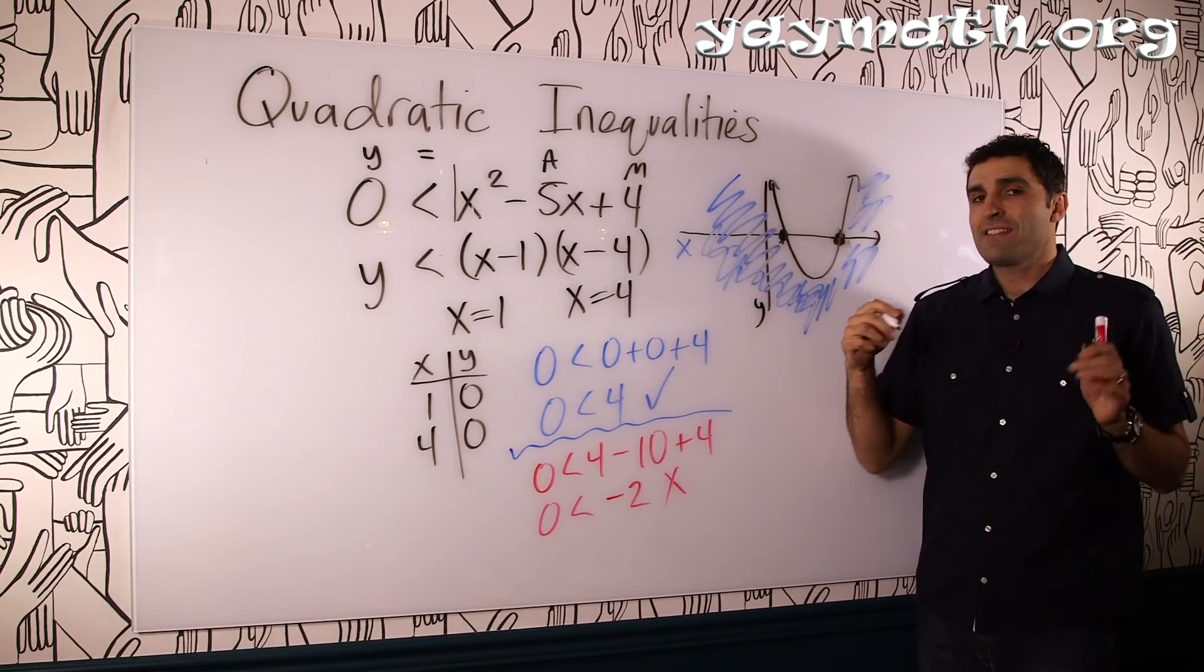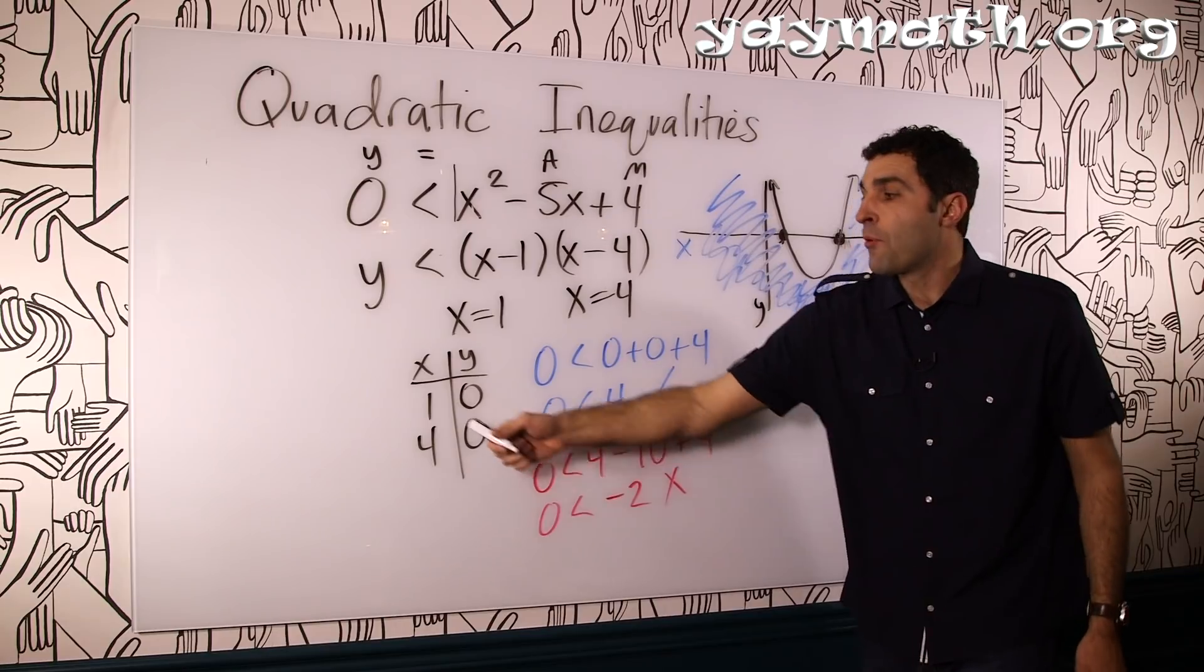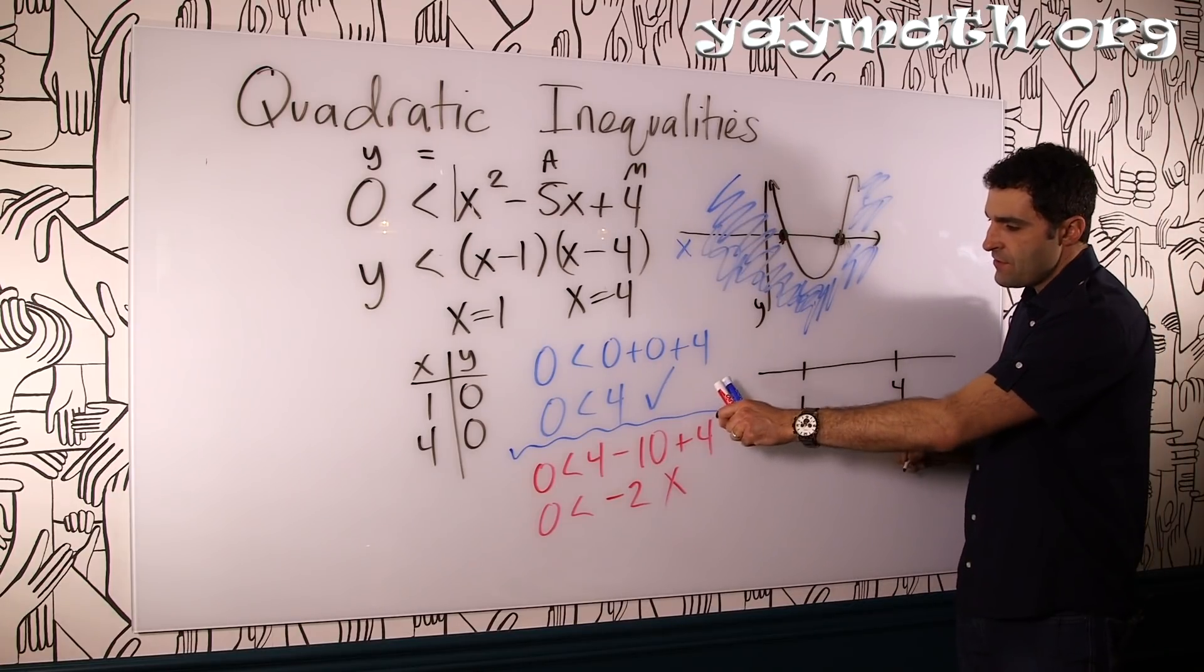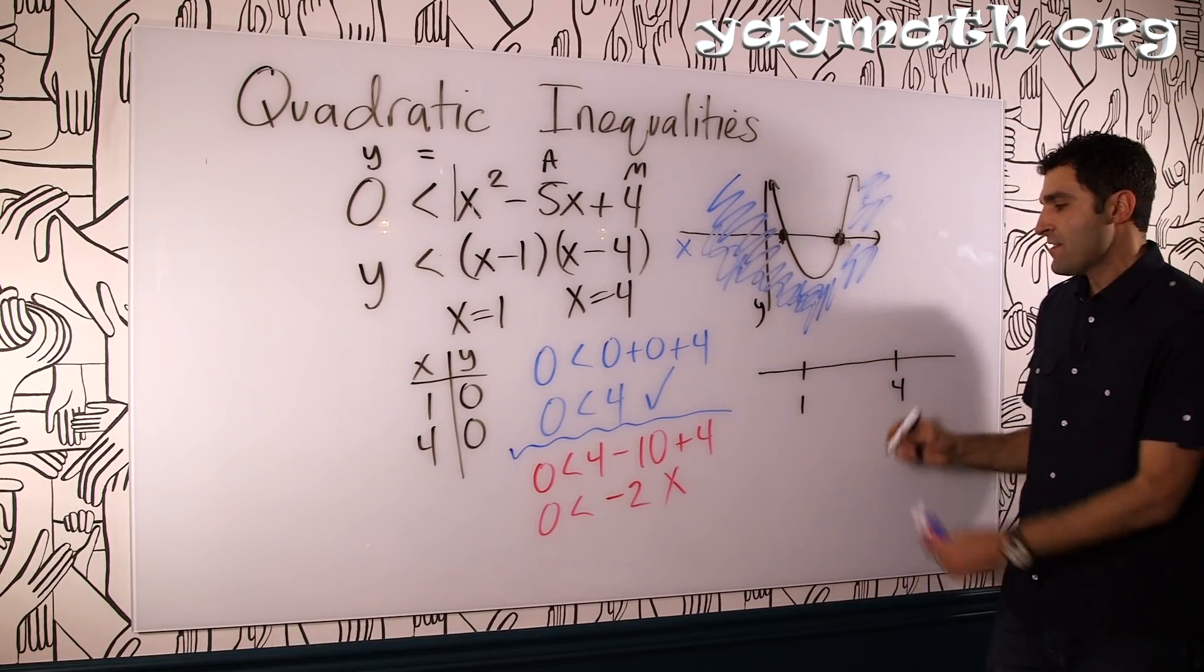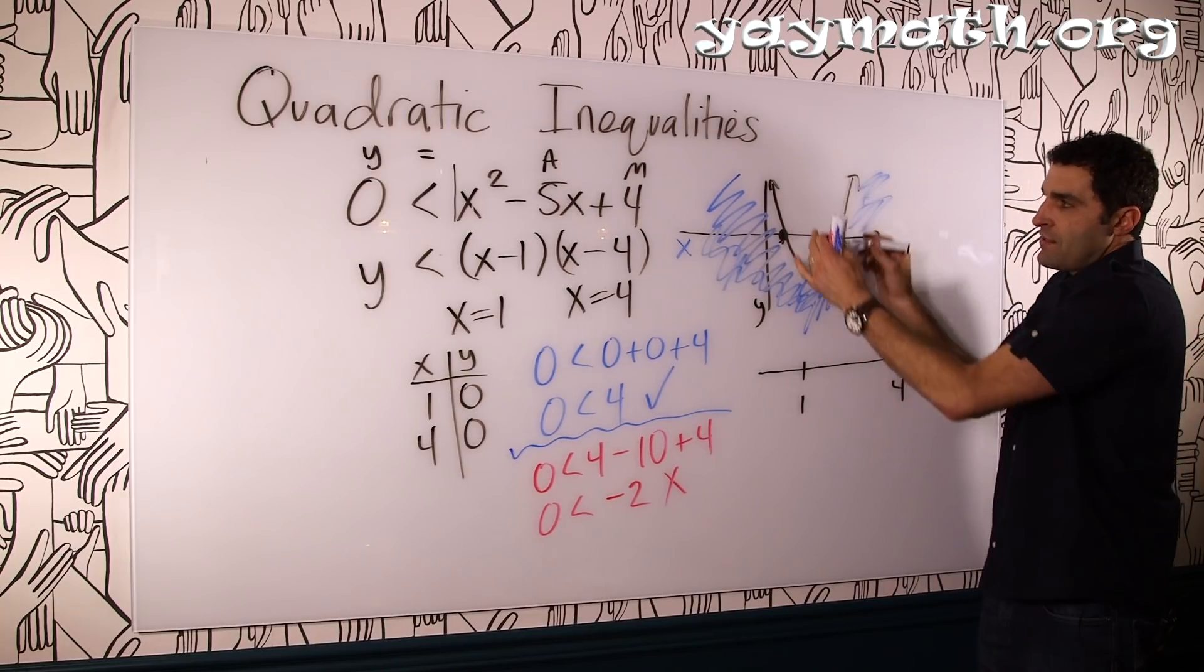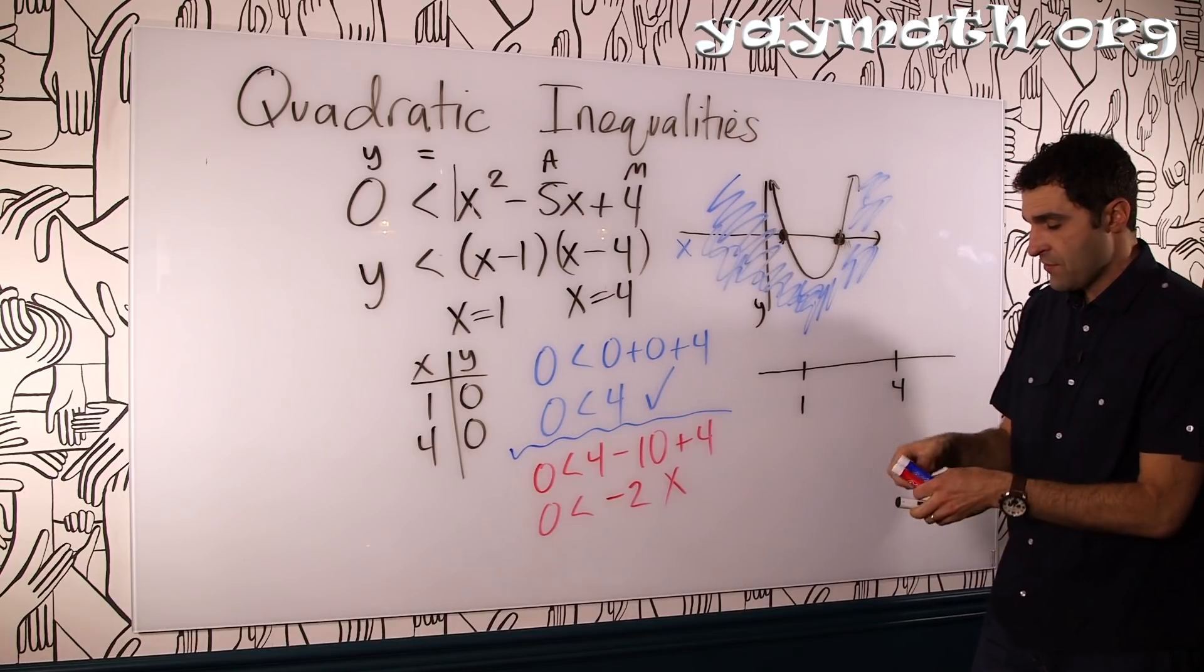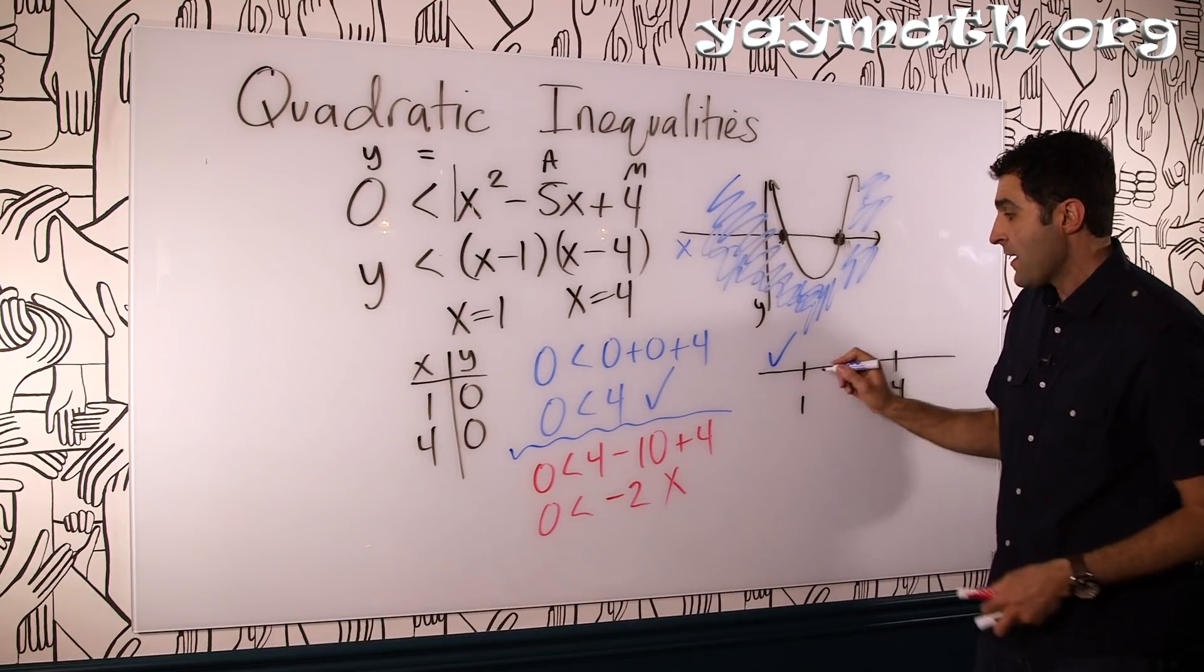And then anything beyond will work, like 5 and 6 and 7 and 10 and all those other values. So let's insert what the books do. The books have you create these two, what I call, border values. And then you have this little chart here. 1, 4. And you test values beyond, between and beyond. But they don't really give you any context as to why they work or why they don't.